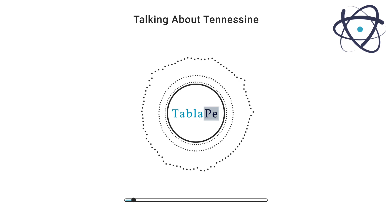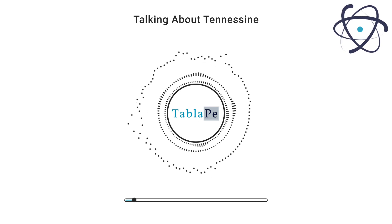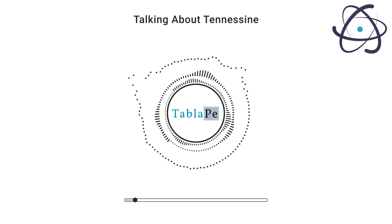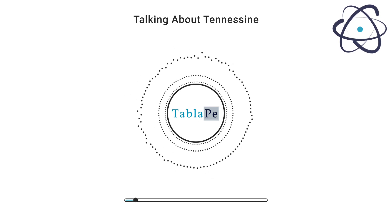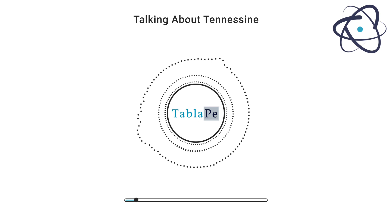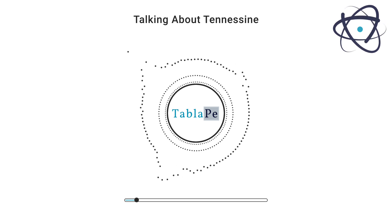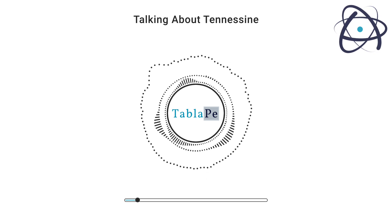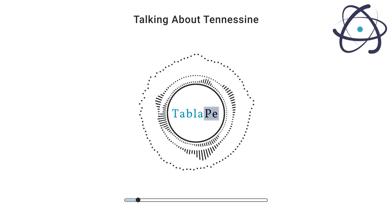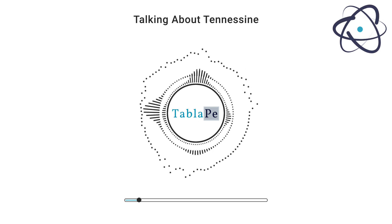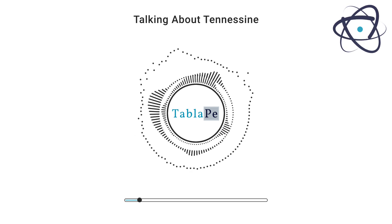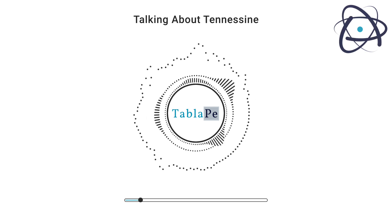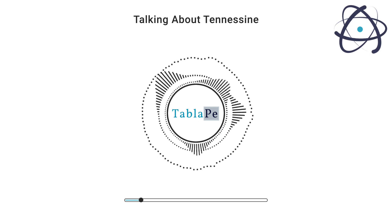Tennessine, with the symbol Ts on the periodic table, is a synthetic element that was first synthesized in 2010. Its discovery was the result of a collaborative effort between scientists from the Oak Ridge National Laboratory in Tennessee and the Joint Institute for Nuclear Research in Russia.